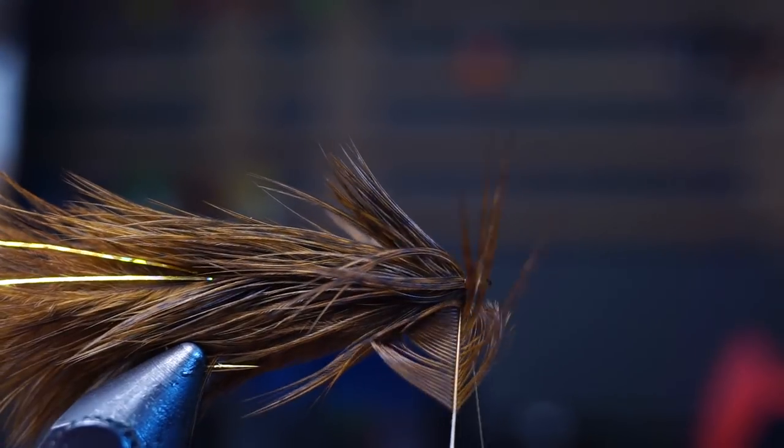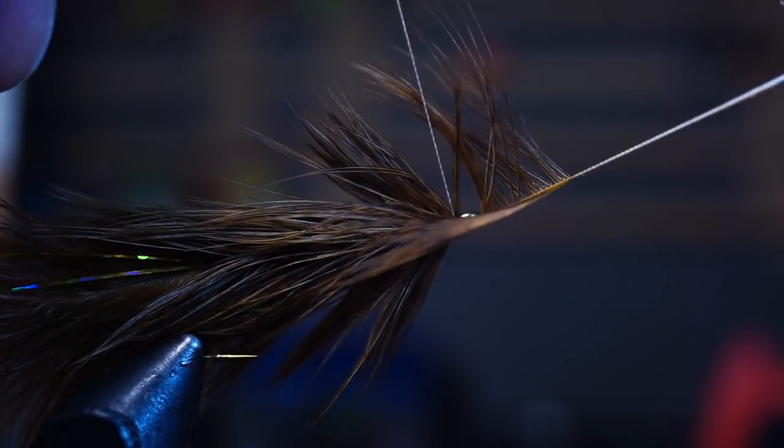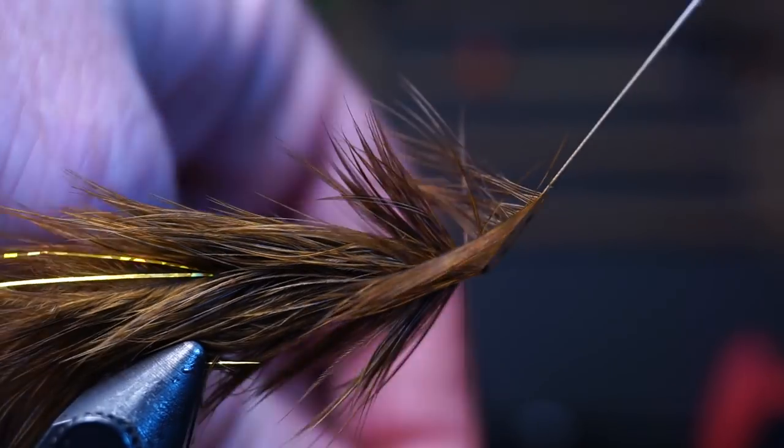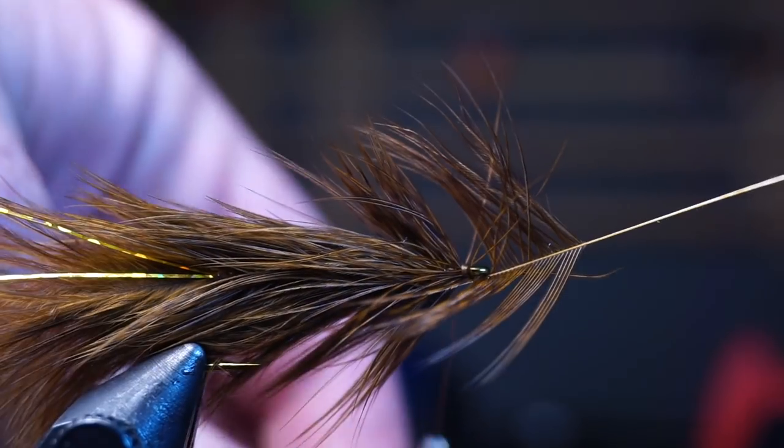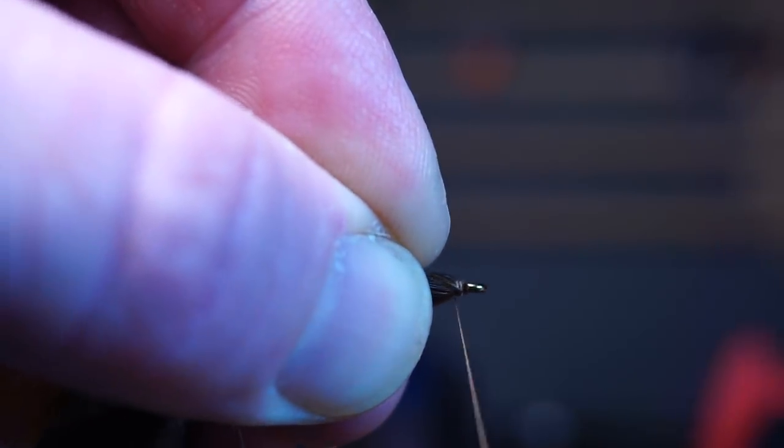If you reach the eye of the fly, don't try to overload the feather. Just tie it off trying not to trap any of those feather fibers with your wraps. Then pull all the fibers rearward and make a few wraps back on top of the feathers just slightly before clipping off the waste.